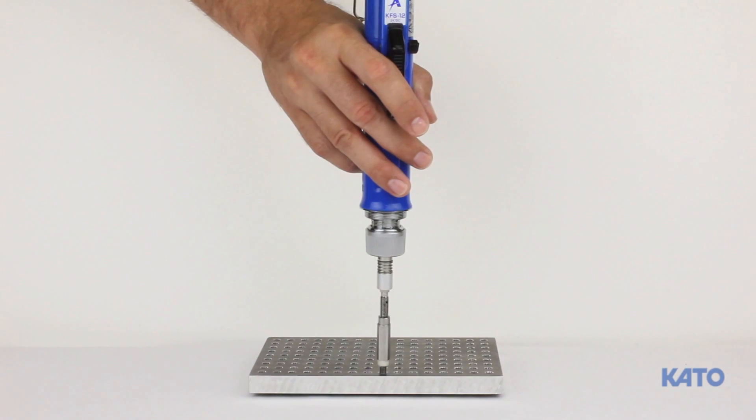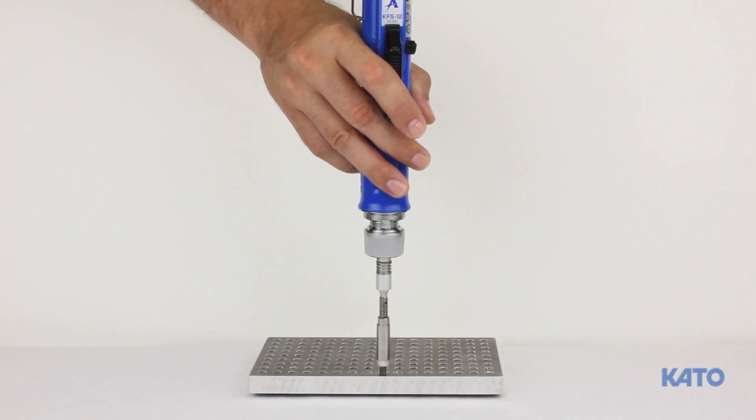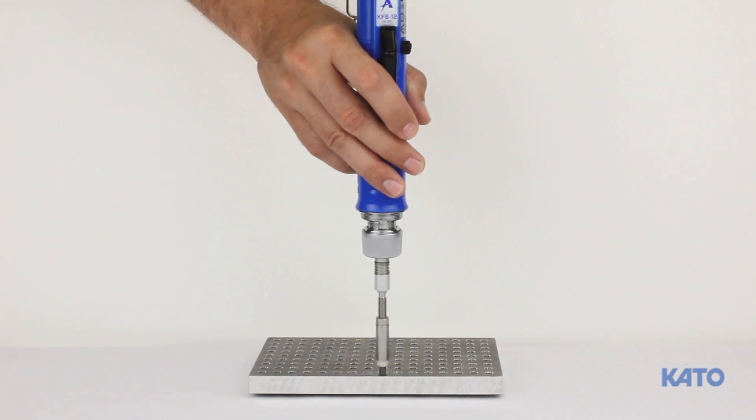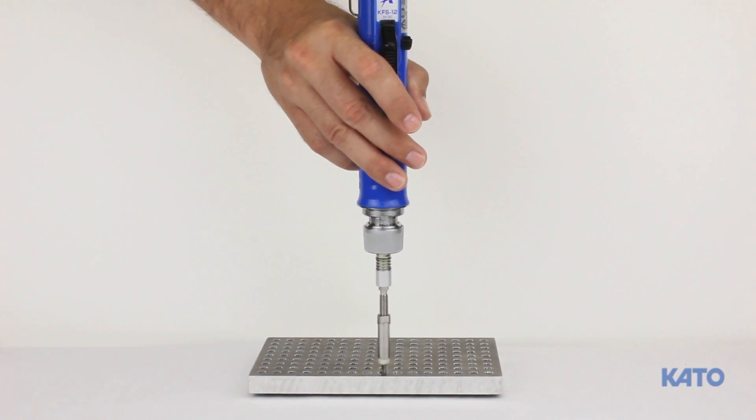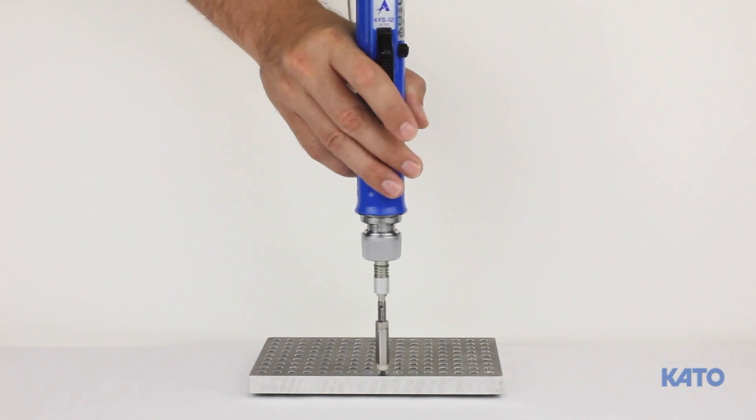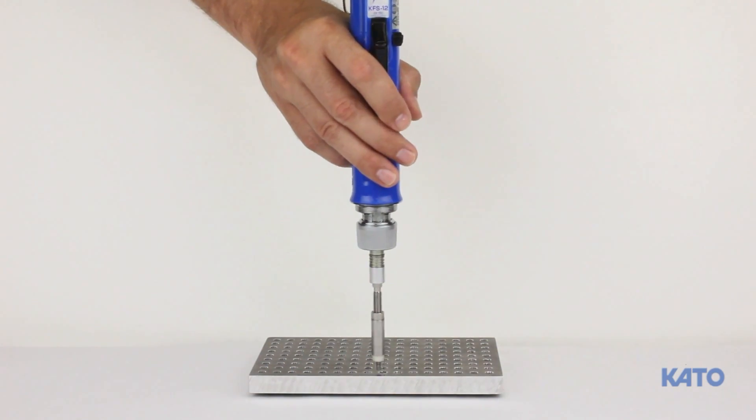It is very important to remember this is an auto reversing tool. Once you press the trigger, do not release it. After the insert is installed, the mandrel will bottom out and cause the electric driver to reverse. Continue to hold the trigger until the mandrel exits the installed insert completely.